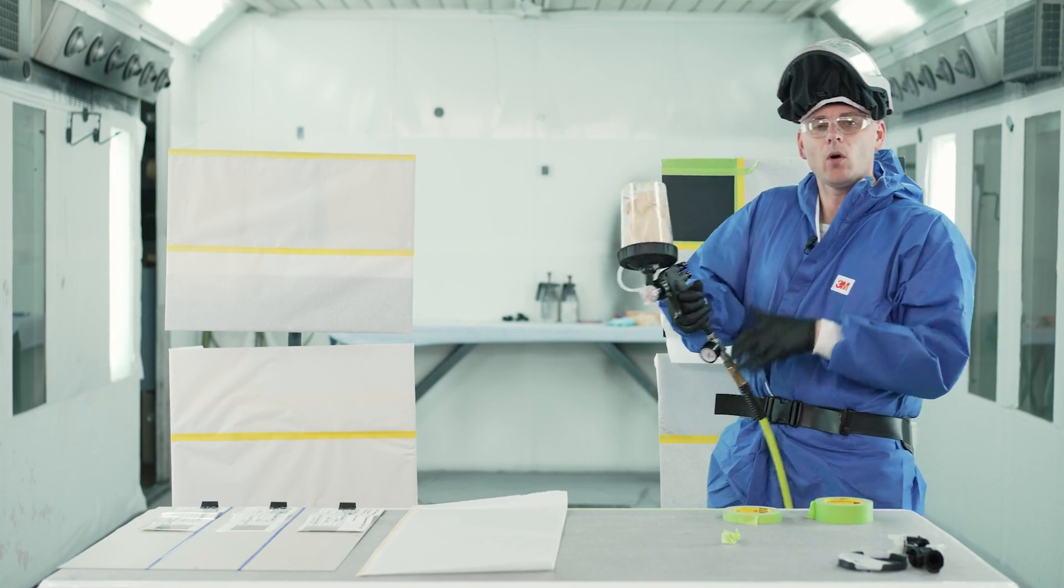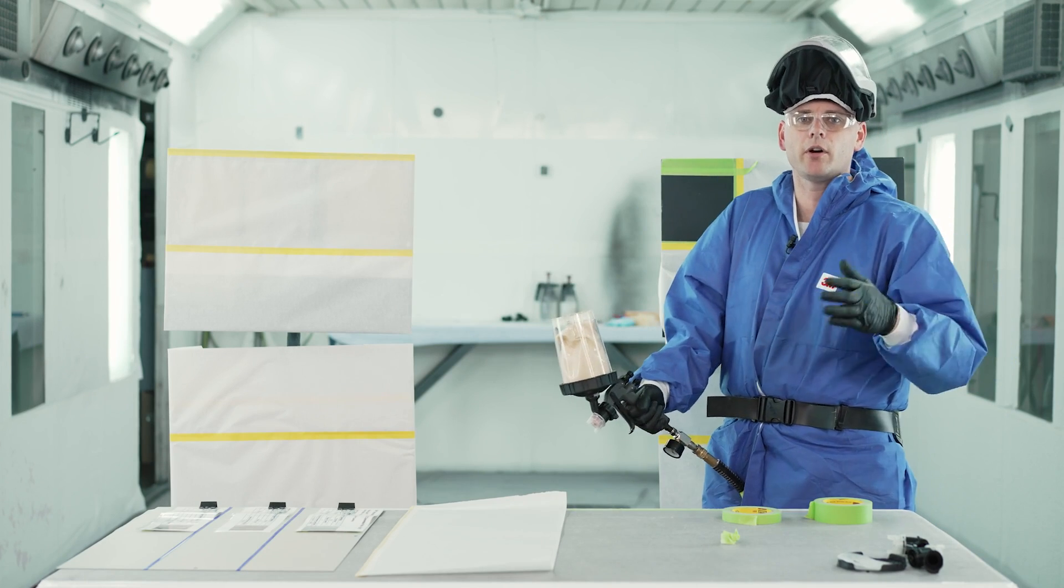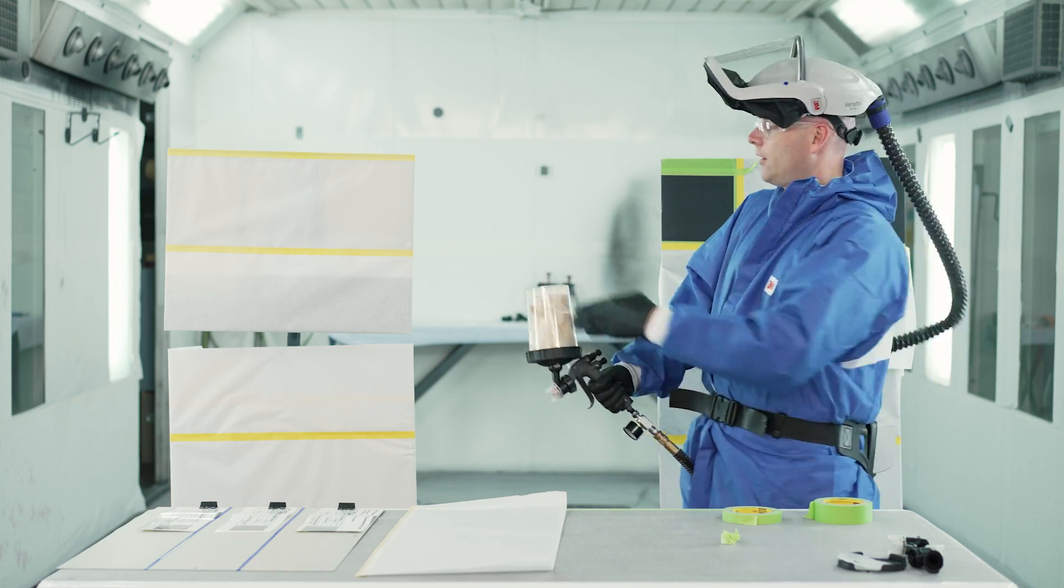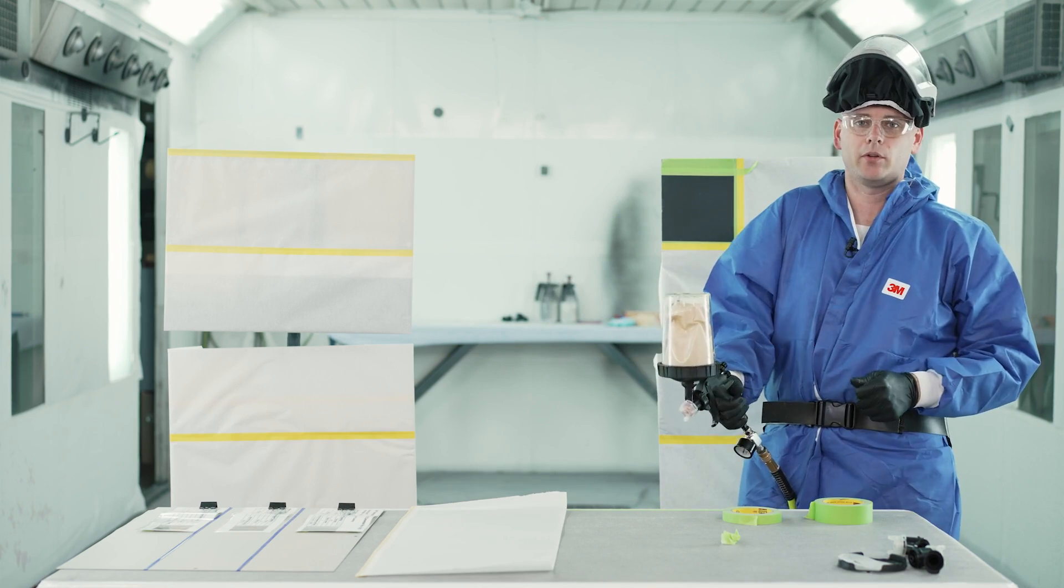One more thing to keep in mind, it's always good to have some sample areas set up to make sure your gun is spraying the way you want before you actually dive into your panel. So I'm going to go ahead and get my texture lined up on one side and then dive in and spray my transition piece.